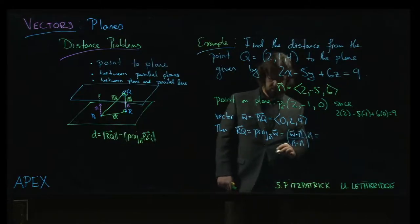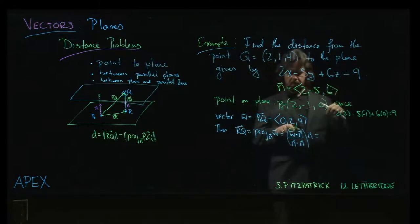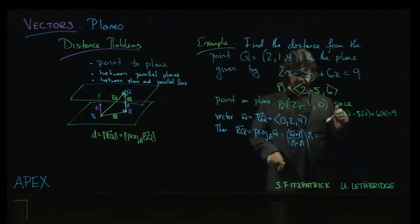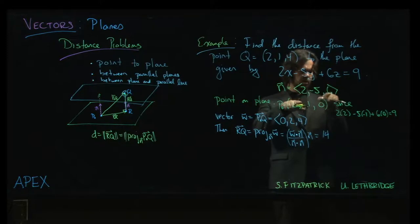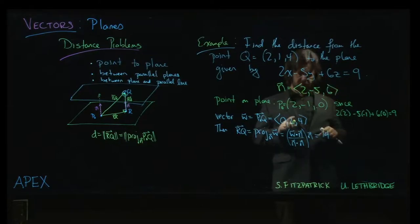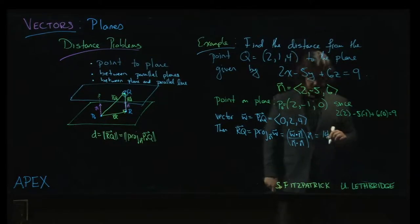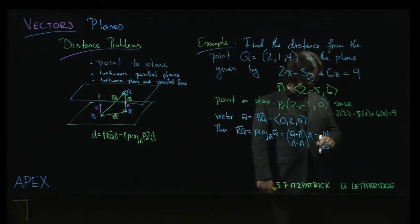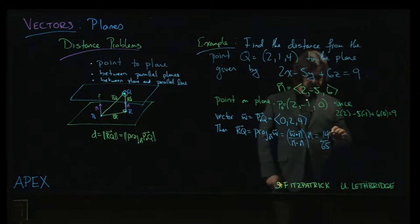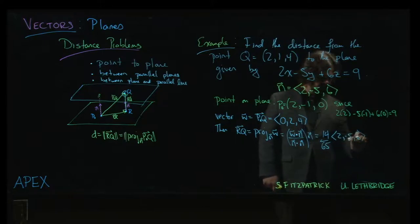Here's my n, here's my w, so we've got 0 minus 10 plus 24, which is 14. n dot n: 6 squared is 36 plus 4 is 40, 5 squared is 25, so 40 plus 25 is 65. So 14/65 times our normal vector (2, -5, 6).